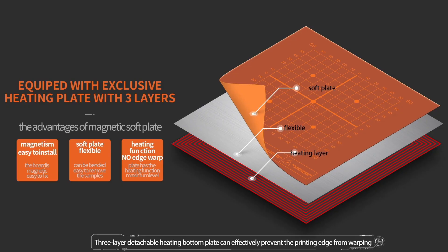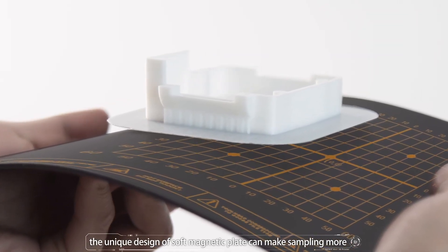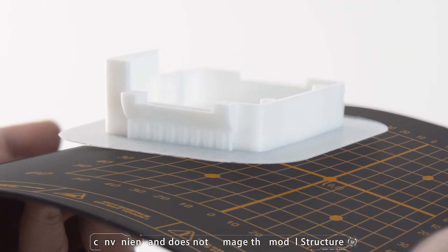Three-layer detachable heating bottom plate can effectively prevent the printing edge from warping. The unique design of soft magnetic plate can make sampling more convenient and does not damage the model structure.